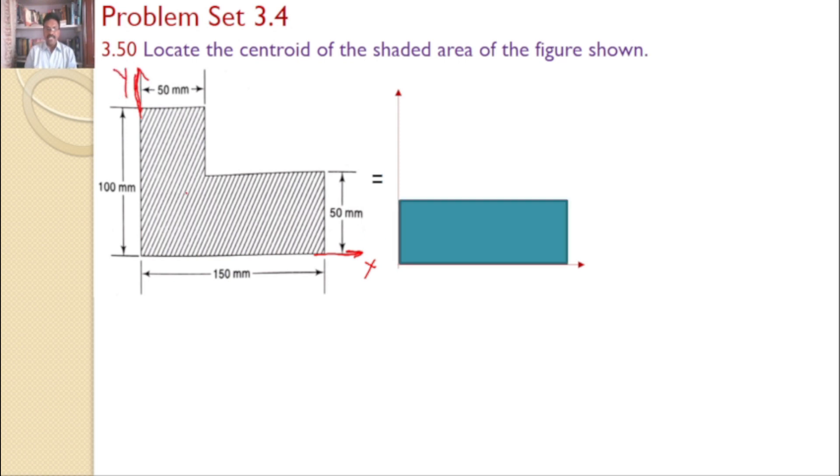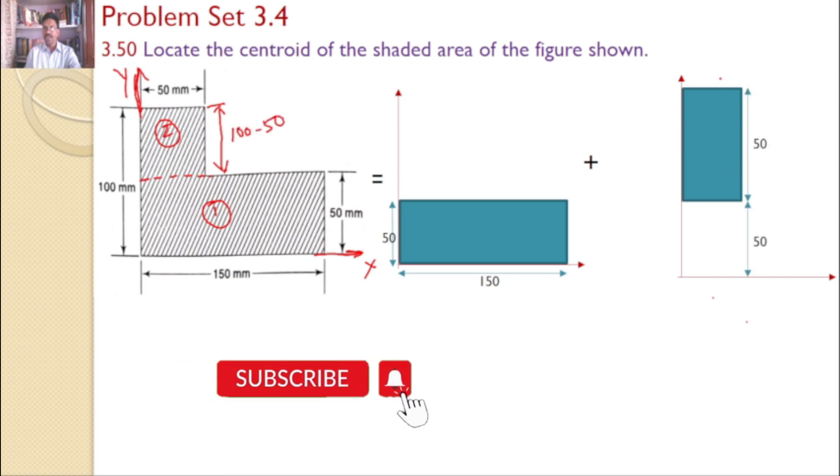Now with reference to this xy-axis, I will take this as my area 1 and this as my area 2. The area 1 dimensions are 150 by 50, and area 2 dimensions are 50 width, and this height total is 100 and this is 50, so this is 100 minus 50. So this height is 50 at a distance of 50 from the bottom, and the width is 50. So the given area I divided into two regular rectangles.